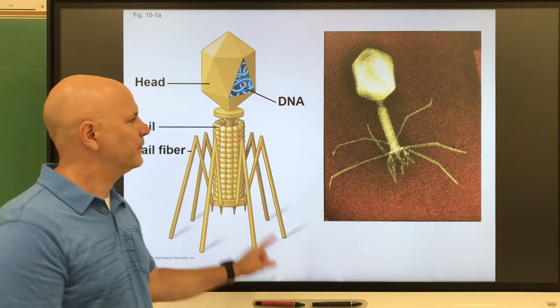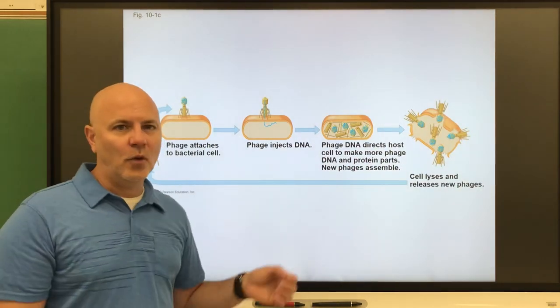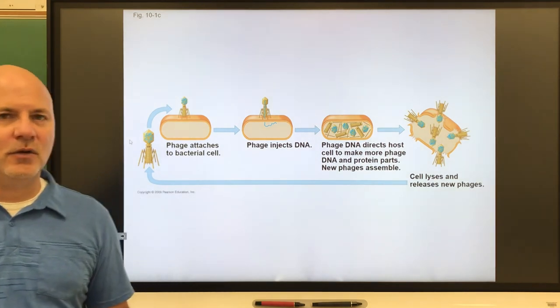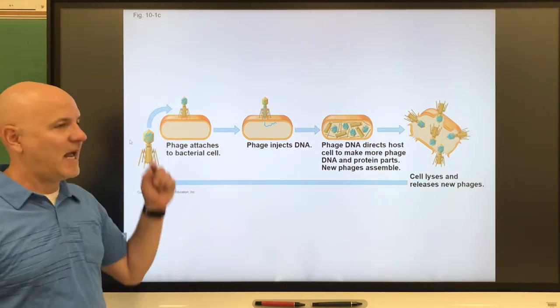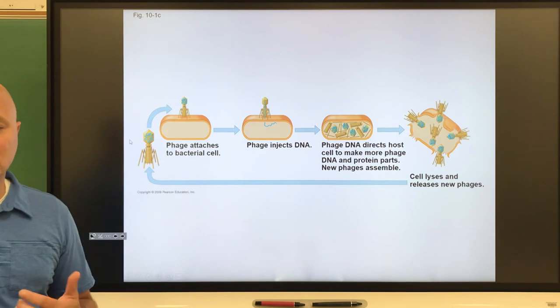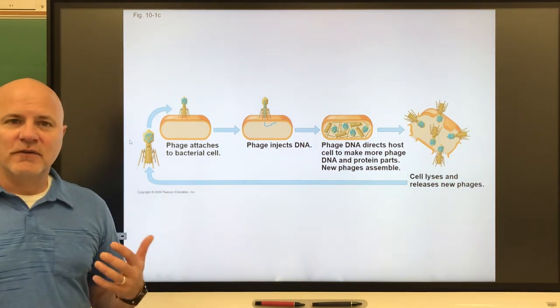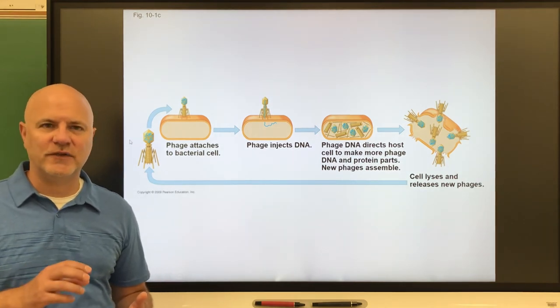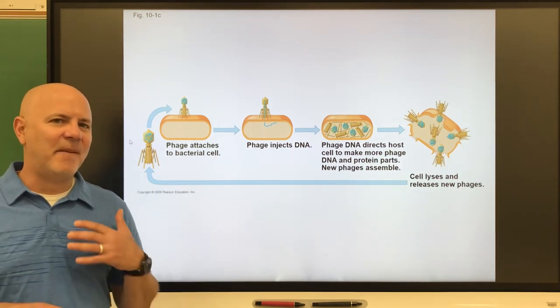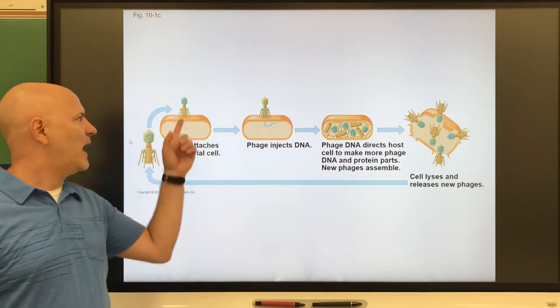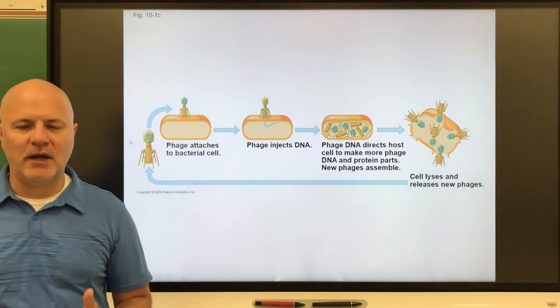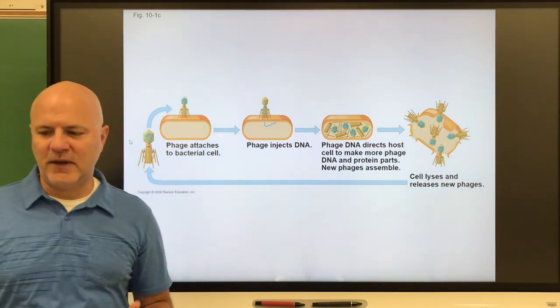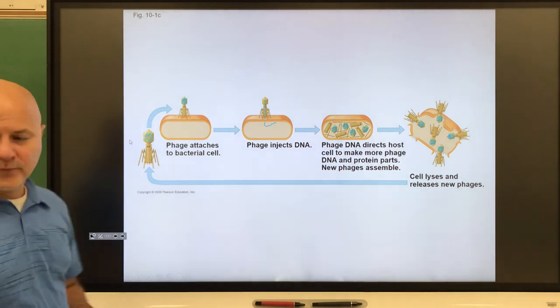In order for a virus to replicate, make copies of itself in you or any other cell, the first thing it has to do is attach to the cell. This is viral attachment, also known as binding. The virus must attach to the host cell by adhering to a surface molecule, and this molecule is specific. If that molecule is not present, the virus can't attach. These viruses are specific; they bind to certain molecules.